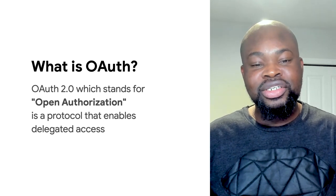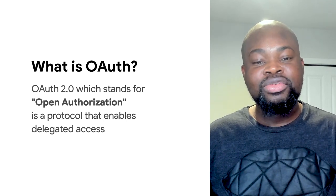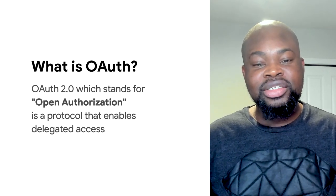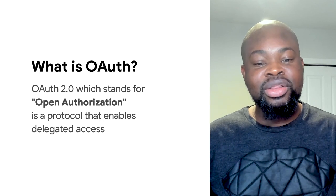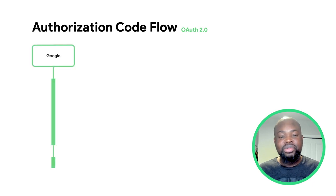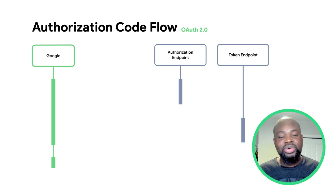OAuth, an authorization protocol, allows a user to authorize a registered application to act on their behalf or access their data in specific contexts, replacing the need for full access methods such as disclosing a username and password. To implement Google account linking, you need to implement two main OAuth endpoints: the authorization endpoint, where the user consents to sharing their data, and the token endpoint, where an access token is generated for Google to act on behalf of the user. This implementation should be done using the secure authorization code flow.